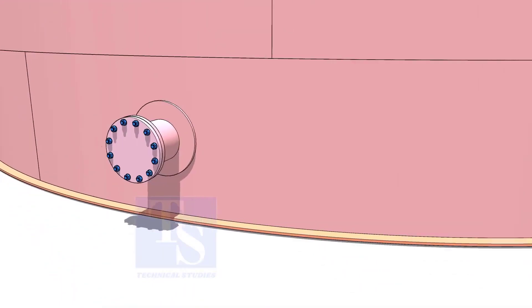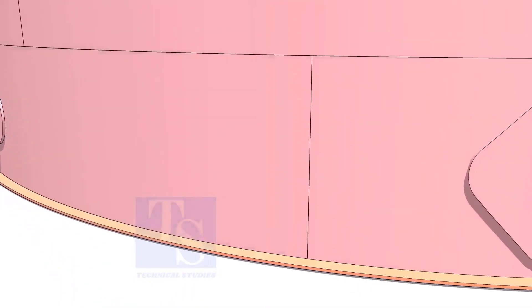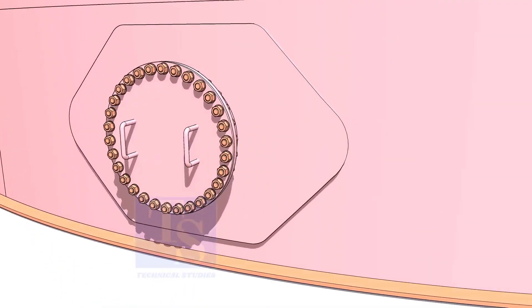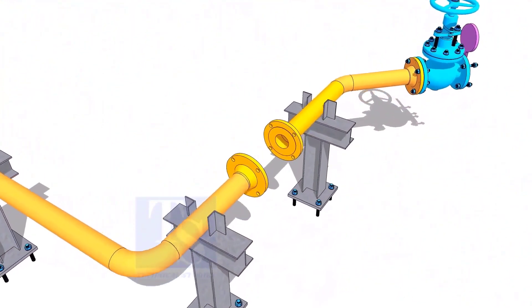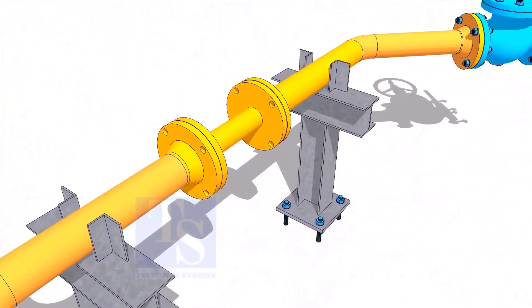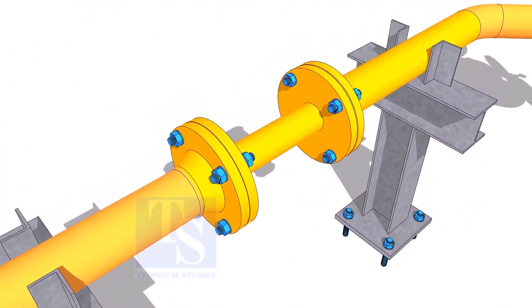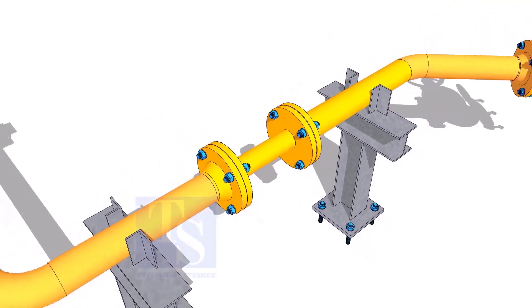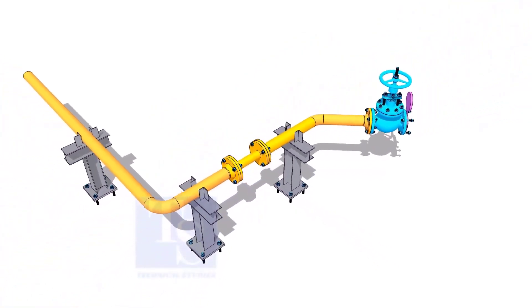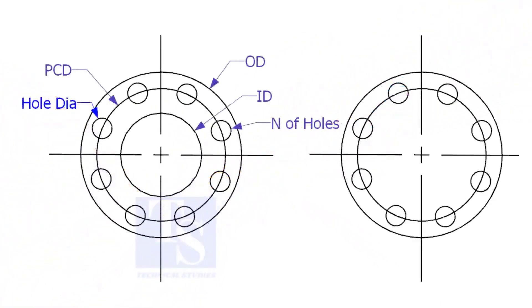Plate flanges are used for low-pressure services or to blind the nozzles of vessels, tanks, etc. for hydrotest purposes. Other use of plate flanges is making temporary spools to replace valves and equipment on a piping system. There are two types of plate flanges: open and blind.